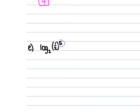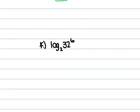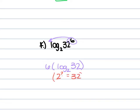For E, the 5 is pulled in front: 5 times log₂ of 1/2. 2 to what power is 1/2? It's negative 1. So 5 times negative 1 is negative 5. For F, we have log₂ of 32 raised to the 6th power. Bring the 6 to the front: 6 times log₂ of 32. 2 to the 5th power is 32, so this is 6 times 5, which is 30.